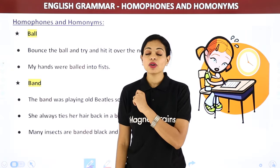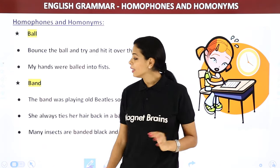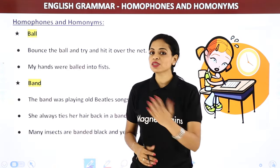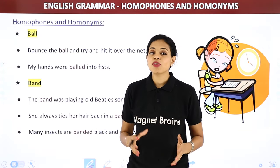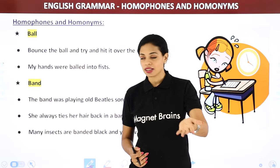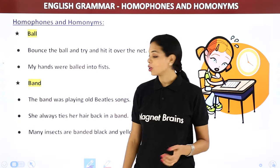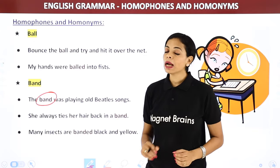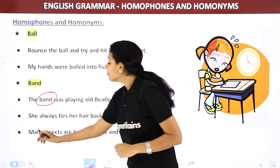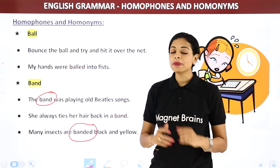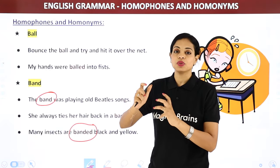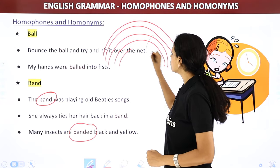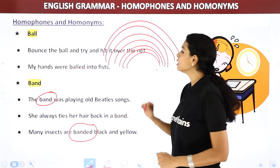Next: 'band.' 'The band was playing old Beatles songs' — a musical band. 'She always ties her hair back in a band' — a hair band or rubber band. 'Many insects are banded black and yellow' — meaning they have colored bands/stripes on them. Like a rainbow has seven bands of color.